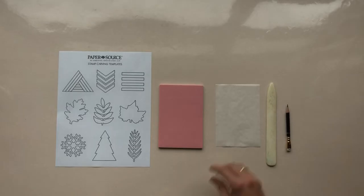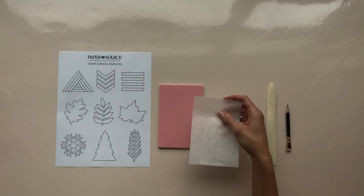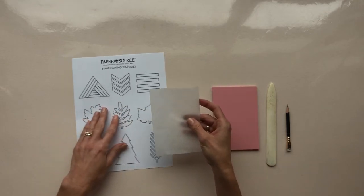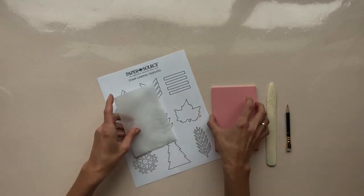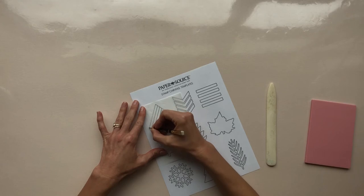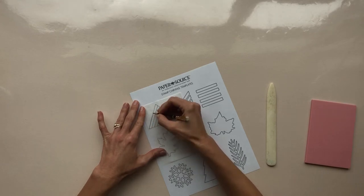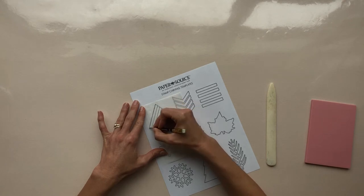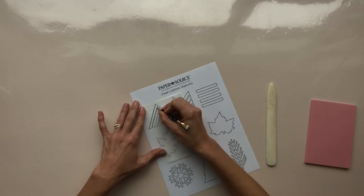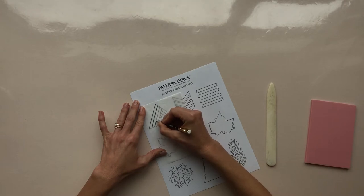One thing that's helpful is using tracing paper you can draw your design on here and then transfer it to the block or you can trace something from a template and then transfer it onto the block. So I'm going to choose this design here and simply trace with a pencil. And you want your lines to be fairly heavy so that it transfers well.